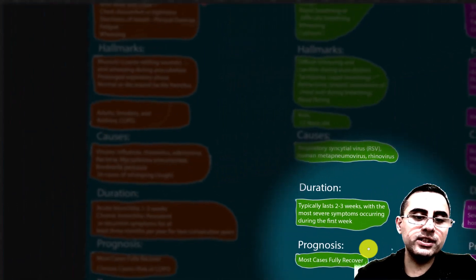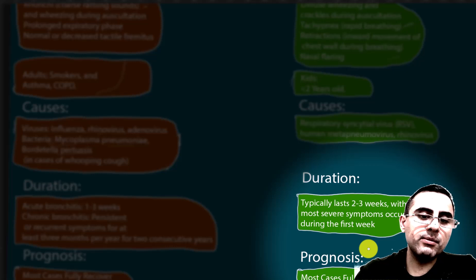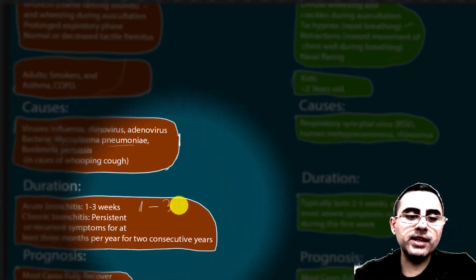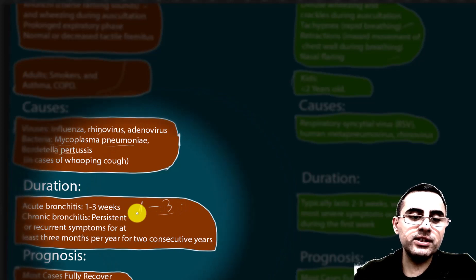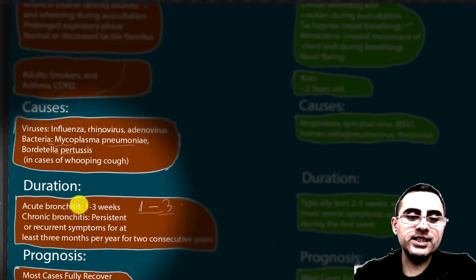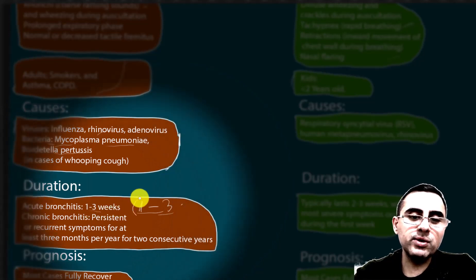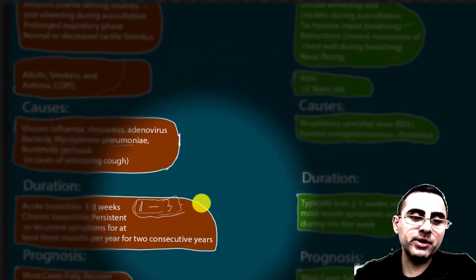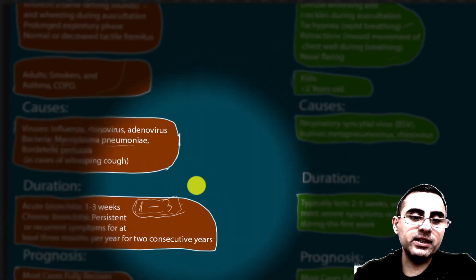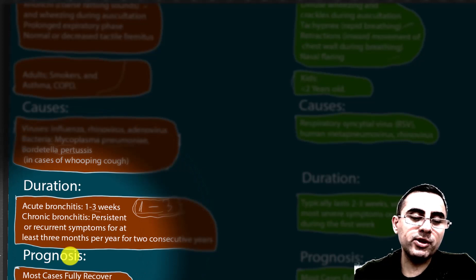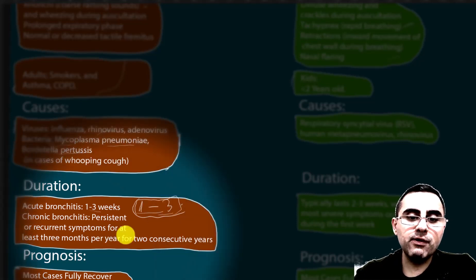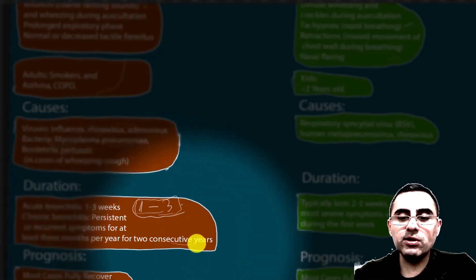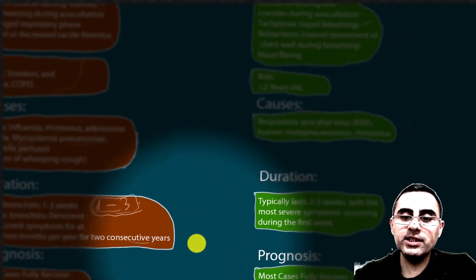Regarding duration: bronchitis usually lasts one to three weeks. If it lasts more than three weeks it may be considered chronic bronchitis. If symptoms are recurrent and persistent for at least three months per year for two consecutive years, it is called chronic bronchitis.